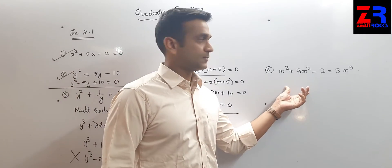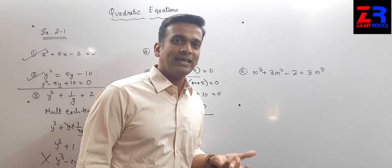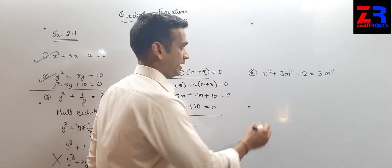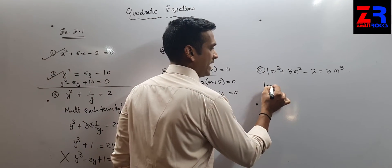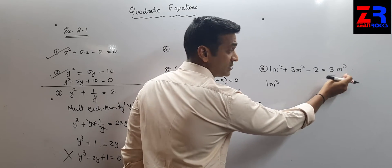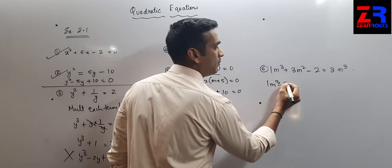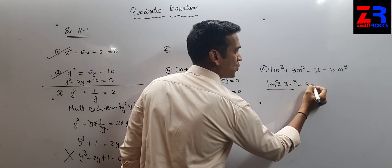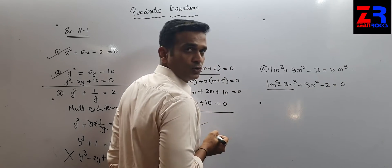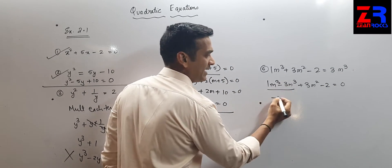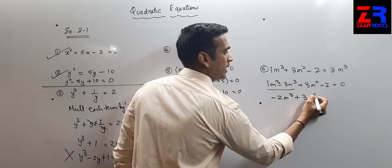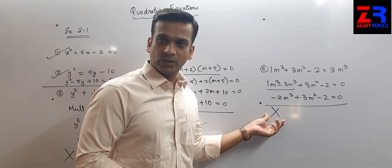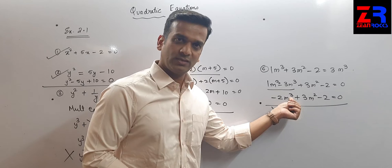Question number 6: I cannot directly decide, so I take all the terms on the left-hand side. Taking 3m³ to the left-hand side, it becomes minus 3m³ plus 3m² minus 2 = 0. Simplifying: 1 minus 3 gives minus 2m³ plus 3m² minus 2 = 0. This is not a quadratic equation because the power is 3.